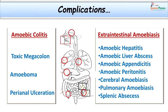As a result of strong virulence factors and capacity to invade deeper tissues, many complications can be expected. Intestinal complications include amoebic colitis, which may result in toxic megacolon in highly invasive disease, amoeboma with masses or abscesses, and perineal ulceration if the sigmoidorectal area is involved. Extra-intestinal complications include amoebic hepatitis, amoebic liver abscess, amoebic appendicitis, amoebic peritonitis, cerebral amoebiasis, pulmonary amoebiasis, and splenic abscess.